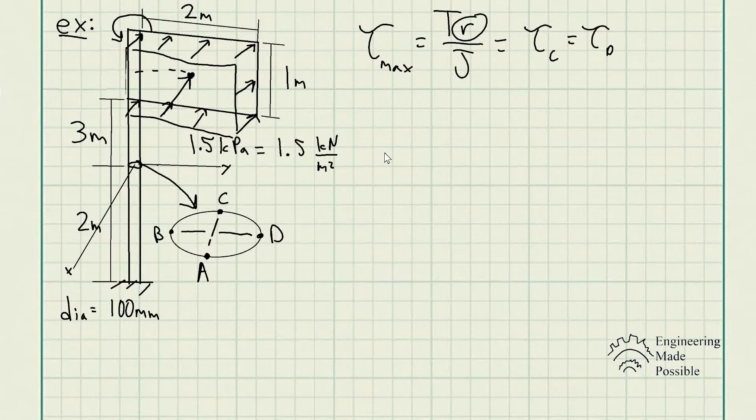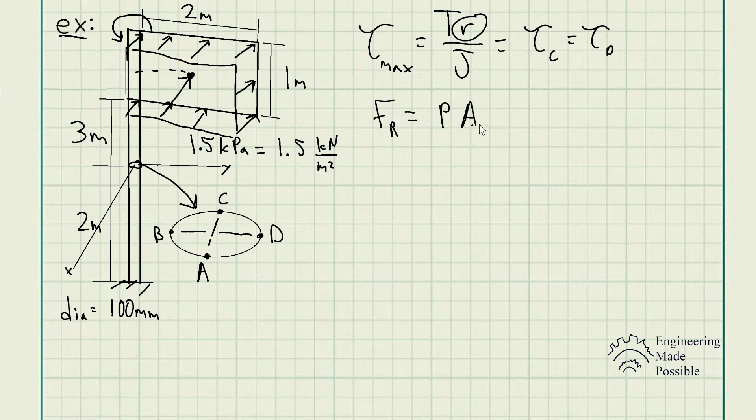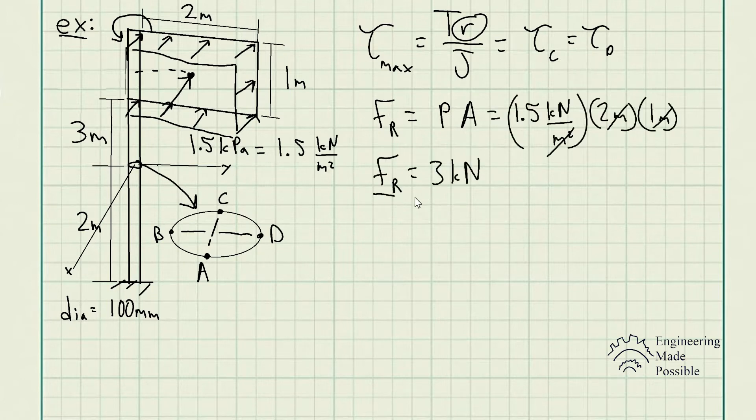First off, what exactly is the torque that we're going to be using? Well, since we have this uniform loading of 1.5 kilopascals or 1.5 kilonewtons per meter squared, for the resultant force at the centroid, FR, which is equivalent to the pressure times the area of this post sign. We have the dimensions 2 meters and 1 meter here, so let's plug in the values, which gives us 3 kilonewtons.